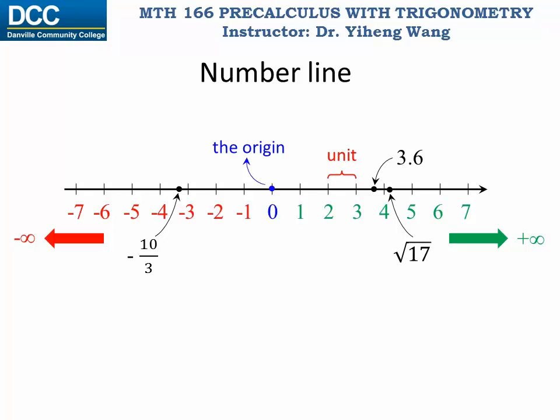Also, judging from the position of these numbers on the number line, you can tell the order of the numbers, since they always increase from left to right. So you can easily visualize from the number line that negative 10 over 3 is smaller than 0, smaller than 3.6, and smaller than square root of 17.